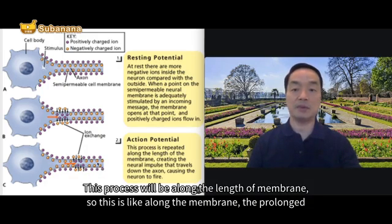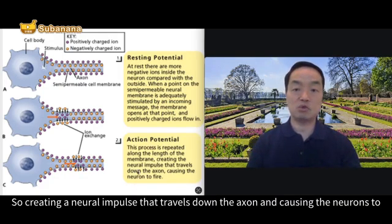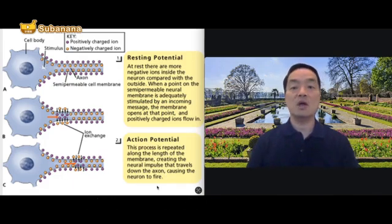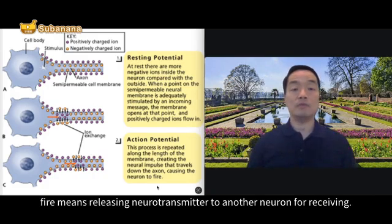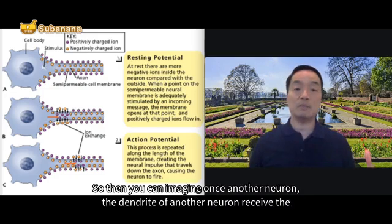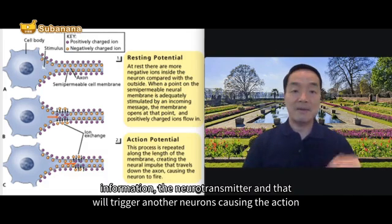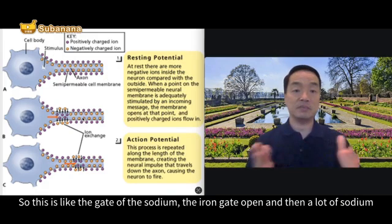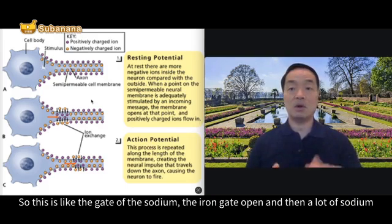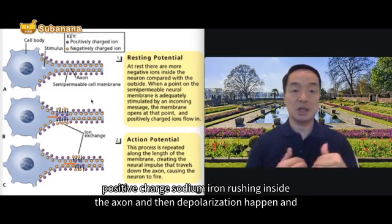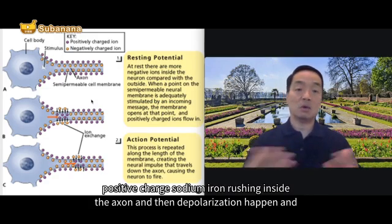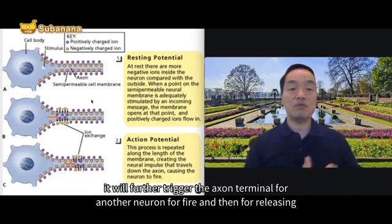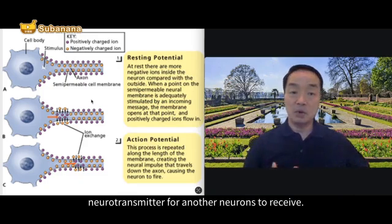Action potential: this process is repeated along the length of the membrane, creating a neural impulse that travels down the axon, causing the neurons to fire — meaning releasing neurotransmitters to another neuron for receiving. Once another neuron's dendrite receives the neurotransmitter, that triggers another neuron causing action potential to happen again. The sodium ion gates open, sodium ions rush inside the axon, depolarization happens, and that further triggers the axon terminals of another neuron to fire and release neurotransmitters for the next neuron to receive.